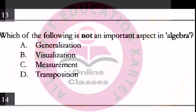Question number 13: Which of the following is not an important aspect in algebra? Options: generalization, visualization, measurement, transposition. The right answer is option C — measurement.